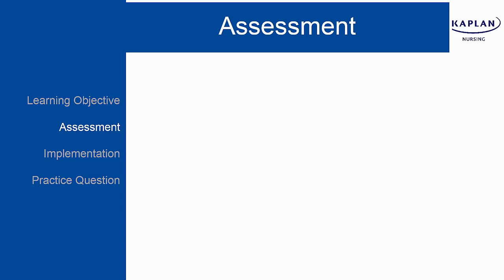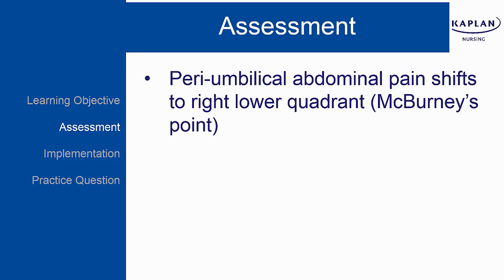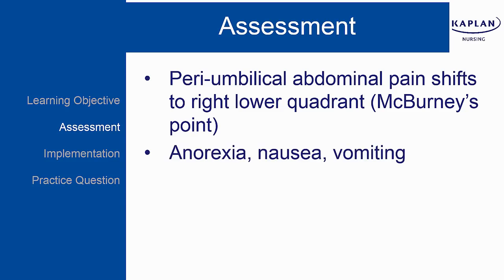Symptoms can vary and the diagnosis can be difficult. Patients experience peri-umbilical abdominal pain. This pain is persistent and continuous and eventually shifts to the right lower quadrant, localizing at McBurney's point. The client experiences anorexia, nausea, and vomiting.